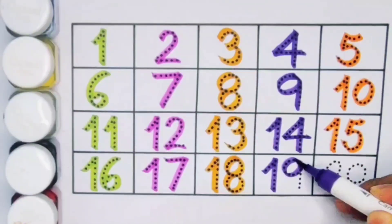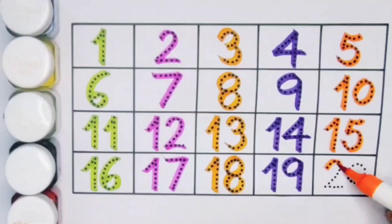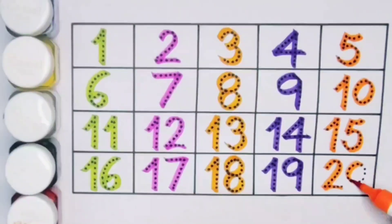Number nineteen. Next is twenty, two zero twenty, number twenty.